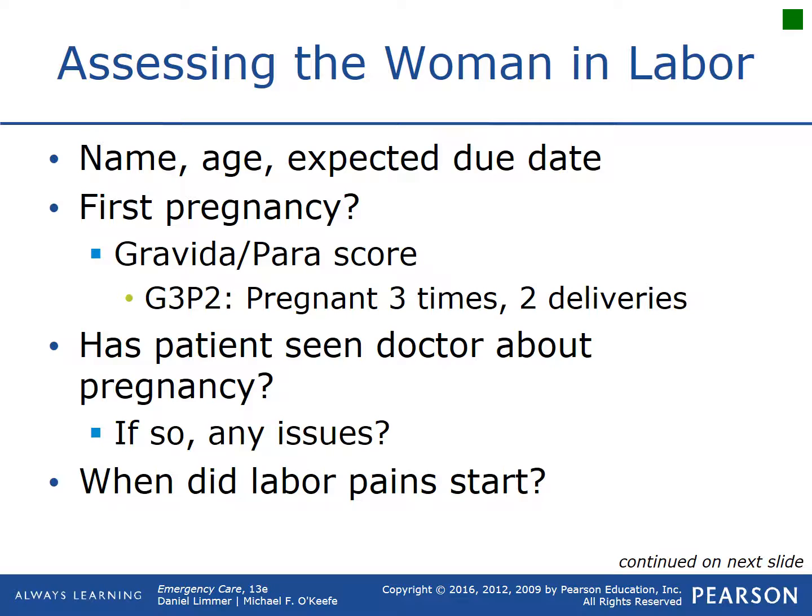Ask if this is their first pregnancy and assess the gravida-para score. If a patient has been pregnant three times with the current being the third and has had two deliveries, that's G3 P2. Remember: G means 'you got knocked up,' P means 'you were a parent' — a successful delivery. A G5 P1 means they've had miscarriages or abortions, making them a high-risk delivery patient.